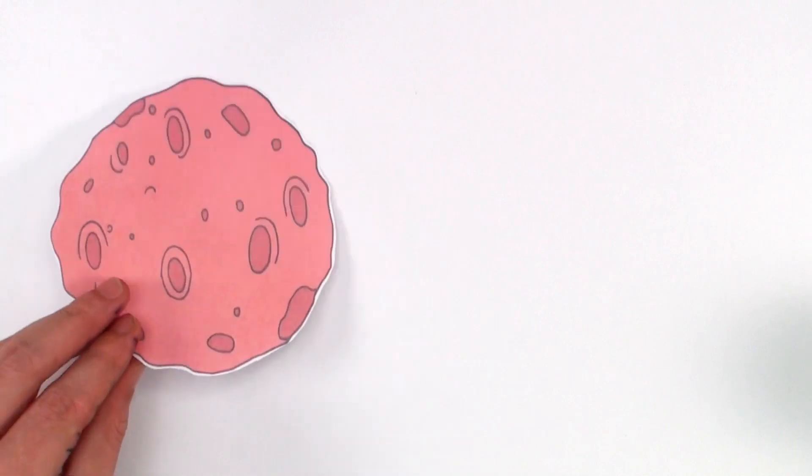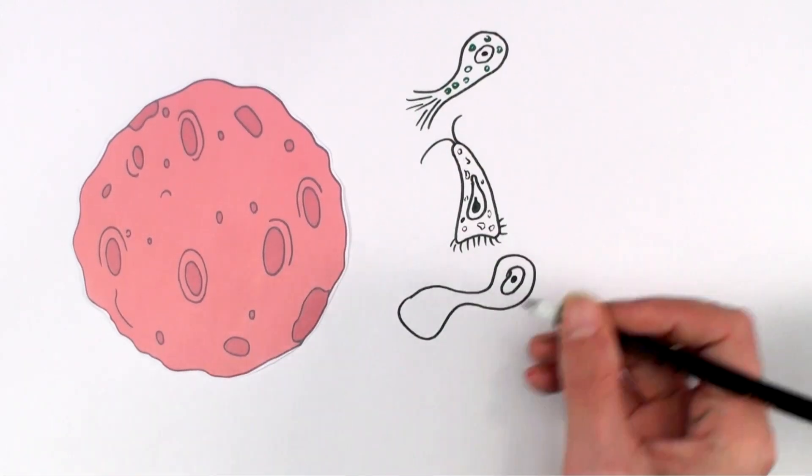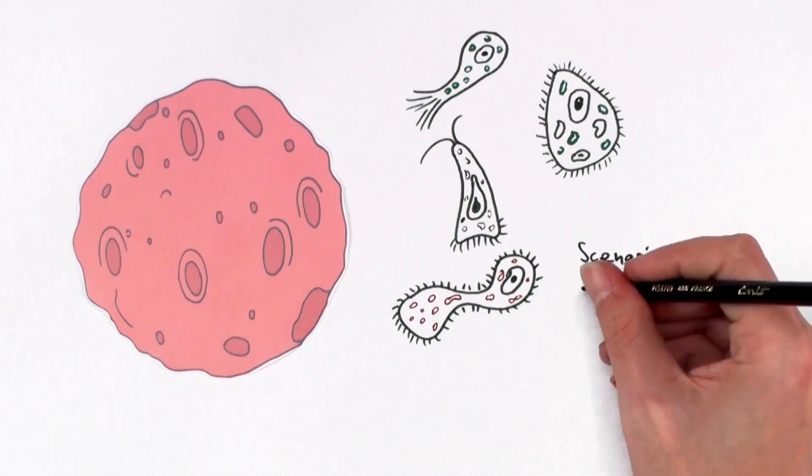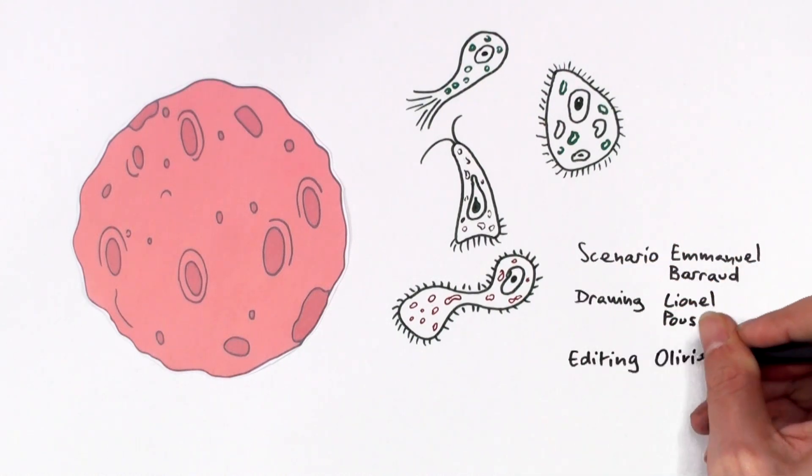This scenario, the most convincing so far, relies on the past existence of biological activity on Mars. Until somebody comes up with another more convincing scenario, we can take for granted that life on Mars has existed.